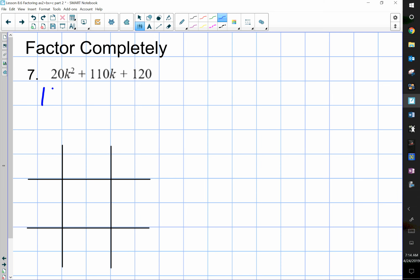So, for this problem, the greatest common factor is 10. So, the first thing I'm going to do is factor out a 10. When I do that, I can divide 20 by 10 and get 2k squared, plus 110 divided by 10 is 11k, plus 120 divided by 10 is 12.